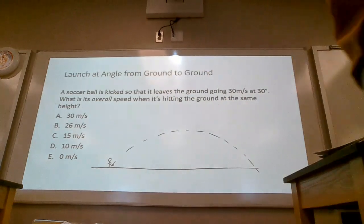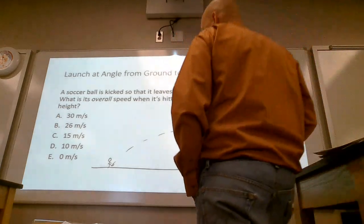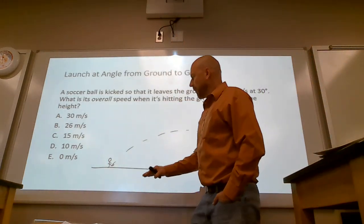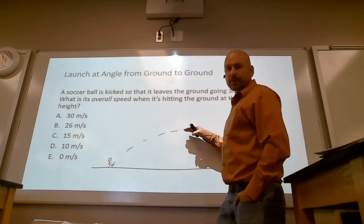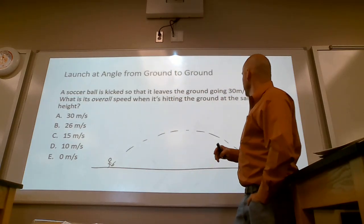Read that question. Pause. The correct answer is A, 30 meters a second. Horizontally, it maintains a constant velocity, whatever that is. You're doing cosine of 30 times 30.